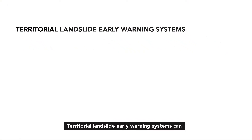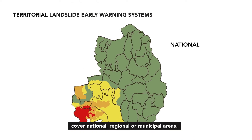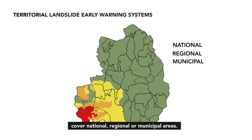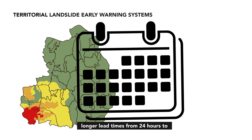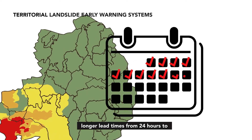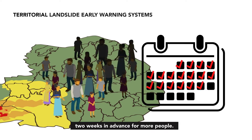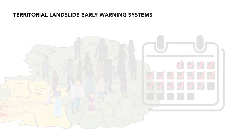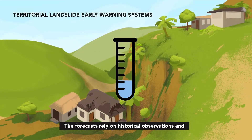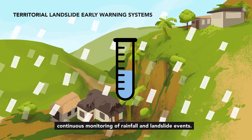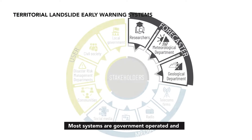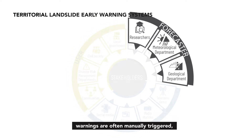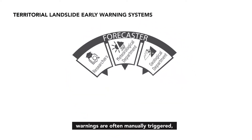Territorial landslide early warning systems can cover national, regional or municipal areas. These systems can provide forecast information with longer lead times, from 24 hours to two weeks in advance, for more people. The forecasts rely on historical observations and continuous monitoring of rainfall and landslide events. Most systems are government operated and warnings are often manually triggered, informed by a process of expert judgment.